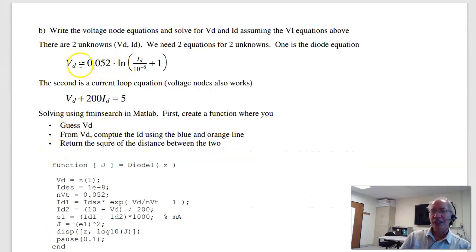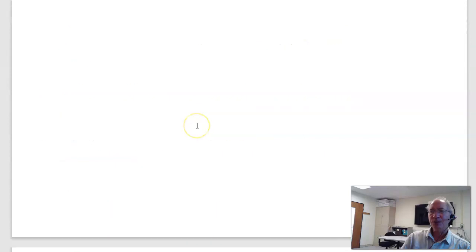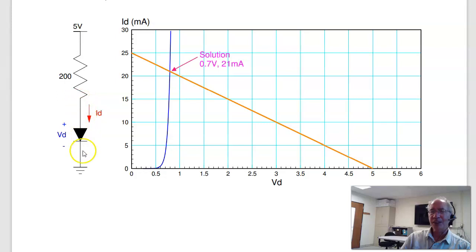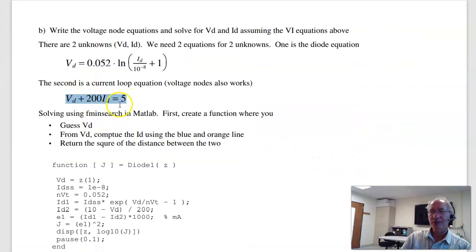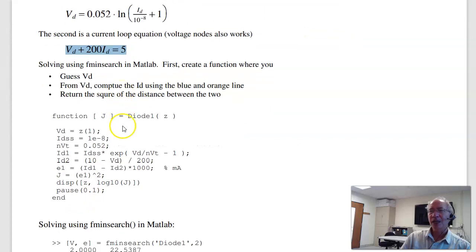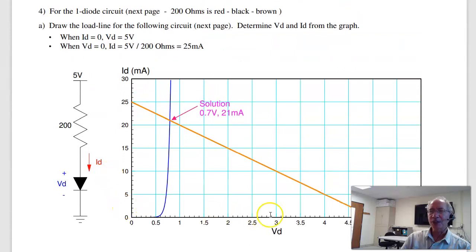Second way is I have two equations. You've got the diode equation. Guess Id, I solve for Vd. The second one is the current loop. 5 volts is 200 times Id plus Vd. Two equations, two unknowns, solve. In MATLAB, I can solve that. I'm going to guess the voltage. From the voltage, I'm going to calculate the current using the diode equation. From the voltage, I'll calculate the current using the load line, this equation. And the two should match. The difference in the two, squared, is my cost. Minimize the cost. And essentially what I'm doing is, I'm guessing the voltage, guess along the x-axis, solve for the blue line, solve for the orange line, the difference in the two is the error, return the error squared.